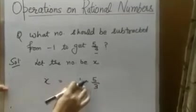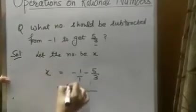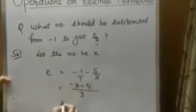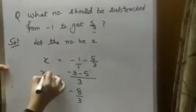Again, if we have nothing in the denominator, we can have 1. By taking LCM, minus 3 minus 5. Both numbers are negative. So minus 8 by 3. We will find out the value of X is minus 8 by 3.